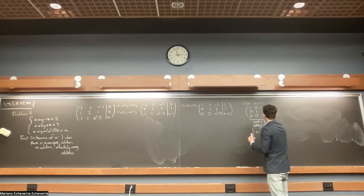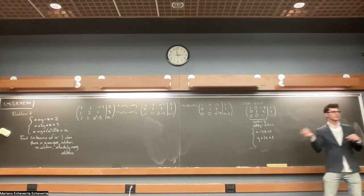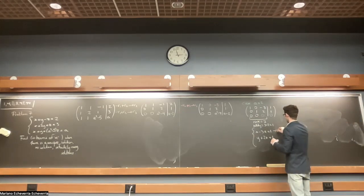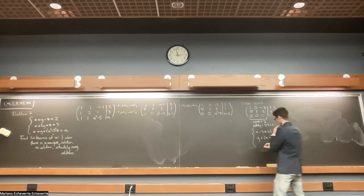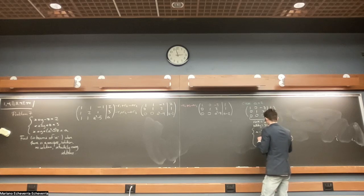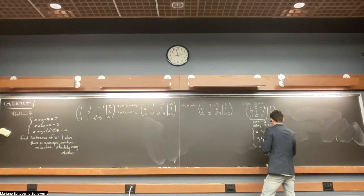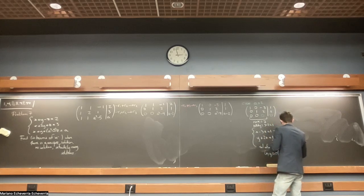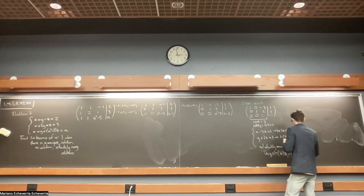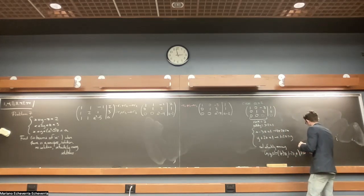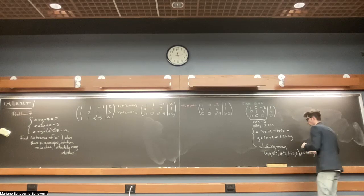This is the same as x - 3z = 1 and y + 2z = 1. So x = 1 + 3z and y = 1 - 2z. The solution is infinitely many, where (x, y, z) = (1+3z, 1-2z, z), with z arbitrary.